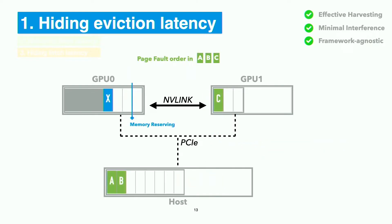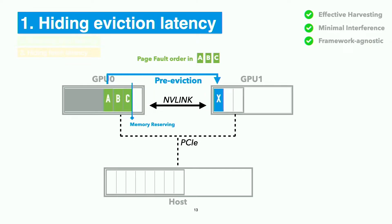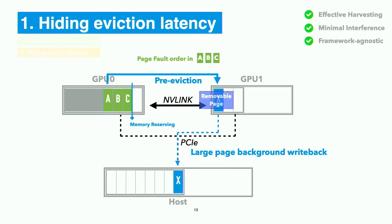This is the workflow of the eviction path coordinated by MemHarvester. The application on GPU 0 accesses pages A, B, and C — a page fault occurs and they are migrated to GPU 0 memory. However, because the reserved memory space is full, page X is pre-evicted to the harvested memory of GPU 1. At the same time, the writeback thread copies page X to host memory and marks the page removable for instant reclaim.